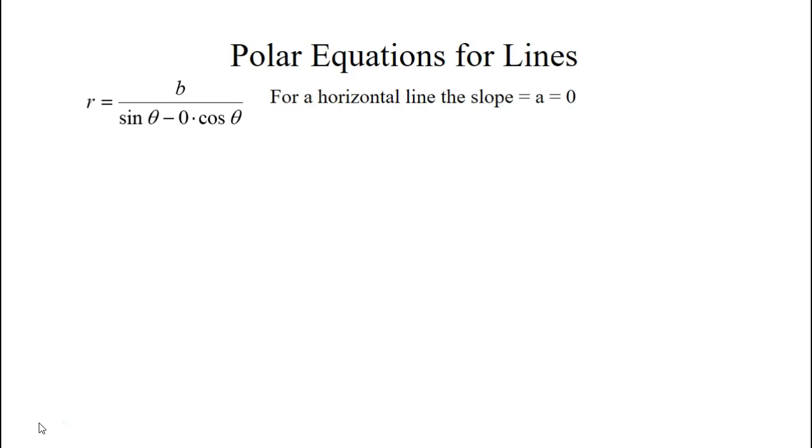If you have a horizontal line your slope is 0, so I replaced a with 0 in our equation. And it simplifies to r equals b over sine theta, or you can write r sine theta equals b where b is the y-intercept.